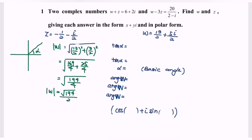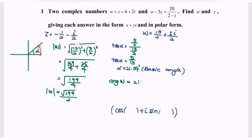Next, find the basic angle alpha for w. Tangent alpha equals y over x, which is (5 over 2) divided by (13 over 2), simplifying to 5 over 13. This gives a basic angle of 21.04 degrees. Since w is in the first quadrant, the argument of w equals 21.04 degrees, which in radians is 0.367 radians.